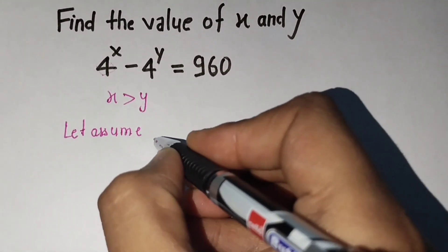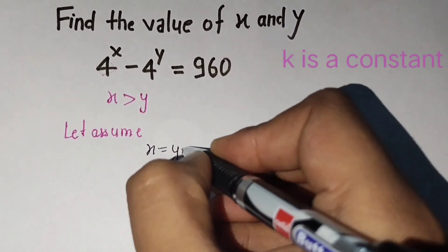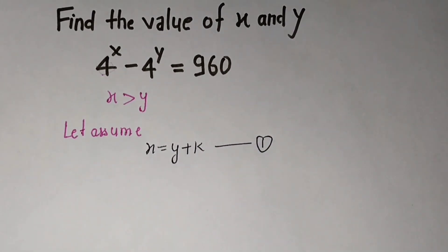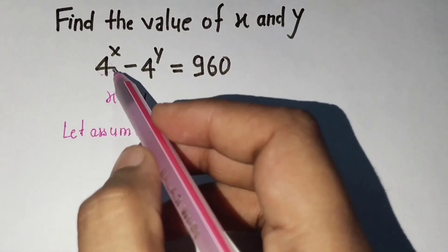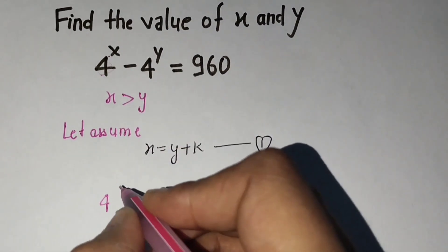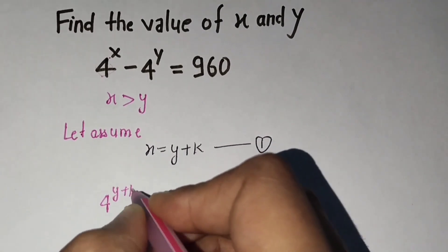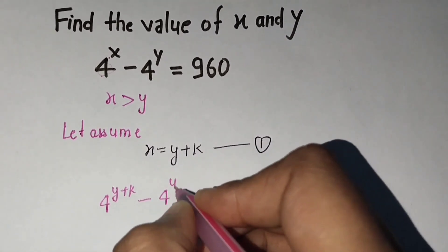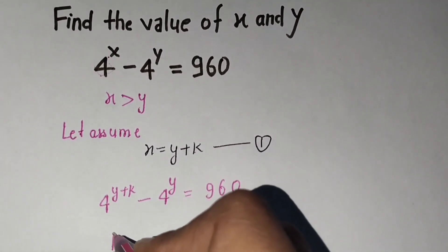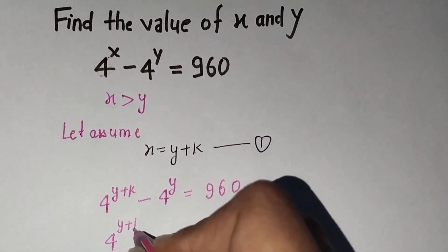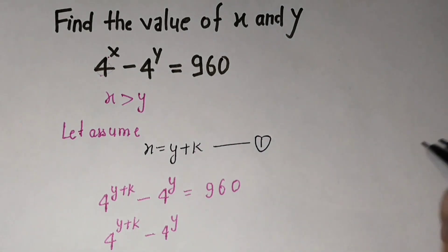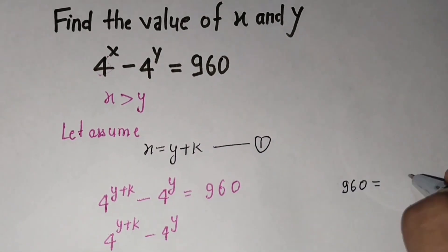Let's assume x equals y plus k — this is equation one. We put this into the given equation: replace x with y plus k, so 4 raised to power (y plus k) minus 4 raised to power y equals 960.